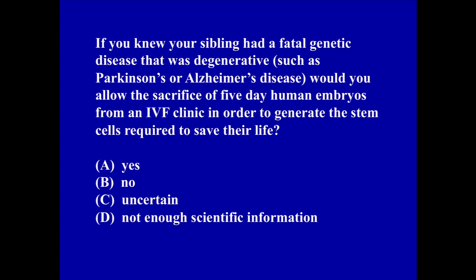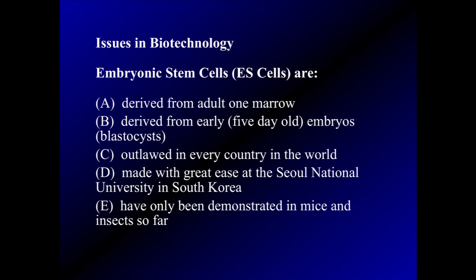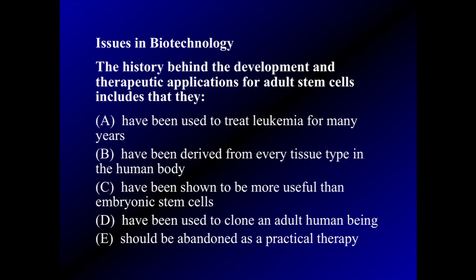If you knew your sibling had a fatal genetic disease that was degenerative, such as Parkinson's, would you allow the sacrifice of a five-day-old human embryo from an IVF clinic to generate the stem cells required to save their life? That is the dilemma surrounding the controversies about embryonic stem cells. We looked in the last set of lectures about how this could be overcome by applications of adult stem cells, including their use to treat leukemia for many years.